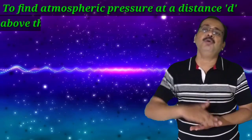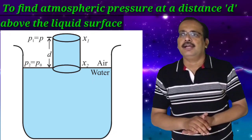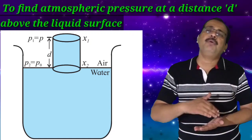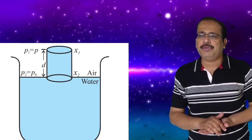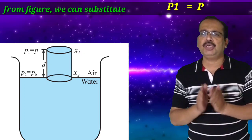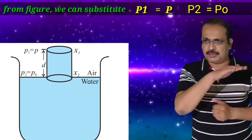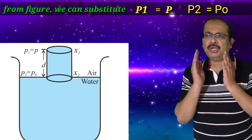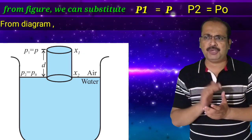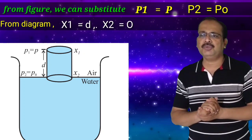To find pressure at a distance d above the liquid surface: from the diagram, the top of the cylinder is above the liquid surface at height d. We can substitute P1 equal to P and P2 equal to P0, since at the surface the atmospheric pressure is P0. From the diagram, X1 is equal to d and X2 is equal to 0.